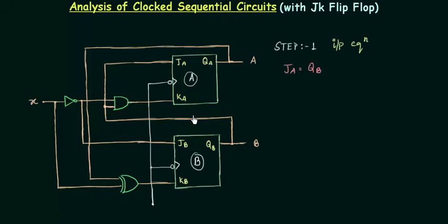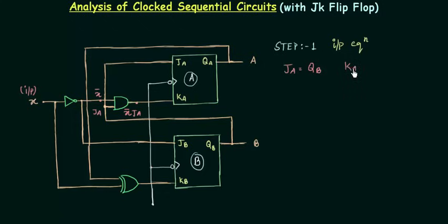Now I will find out the expression for KA. KA is the output of this AND gate, and the two inputs to this AND gate are JA and X complement. X is my input; I have taken the complement and given it to this AND gate. So the output of this AND gate is X' · JA, which equals KA. So KA equals X complement times JA. We are done with the A flip-flop.